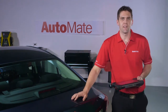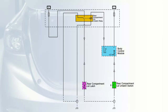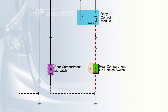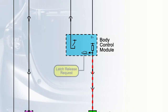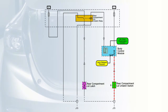The customer has complained the rear latch does not release. This circuit is controlled by the rear BCM. The switch provides a ground to the body control module. The BCM sees this as a latch release request. Providing all other parameters are correct, the BCM will operate the rear latch relay to open the rear compartment.